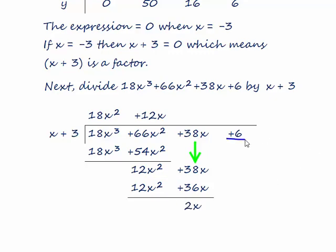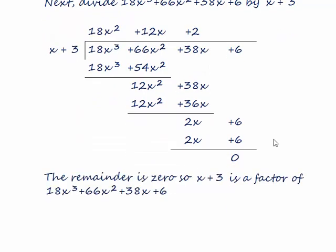So now we bring the 6 down. And what do we multiply x by to get 2x? Well, obviously, 2. And we multiply both those terms by 2. Subtract these two terms from these two terms, and we get 0 as an answer. The remainder is 0. So x plus 3 is a factor of 18x cubed plus 66x squared plus 38x plus 6.